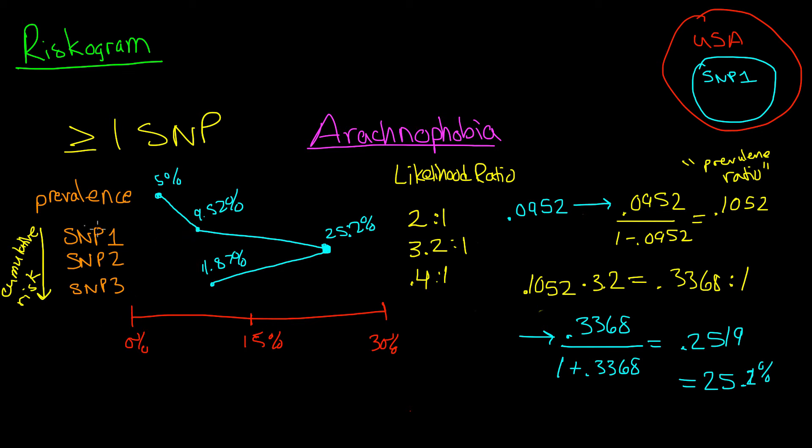So for example, if we only looked at SNP1, that might not really give us a good picture of someone's chance of getting arachnophobia. Just because they have SNP1, it doesn't necessarily mean that their chances are about 10%. Maybe that person also has SNP2, and then their chances would increase.